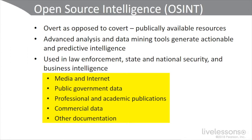There are also professional and academic publications — academic journals, medical conferences, symposiums, academic papers, papers written by master's and PhD candidates, dissertations and theses. Then there's commercial data — commercial images, financial and industrial reports, assessments, and database information that's readily available. Then other documentation is kind of a gray area, called gray literature — technical reports, working papers, information on patents, business documents, unpublished works like unpublished dissertations, and a wide variety of newsletters.